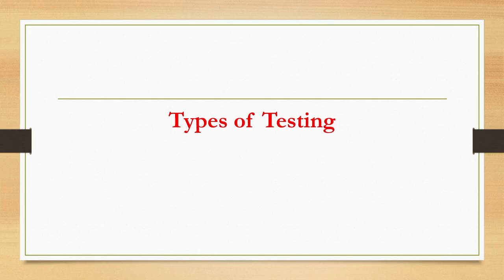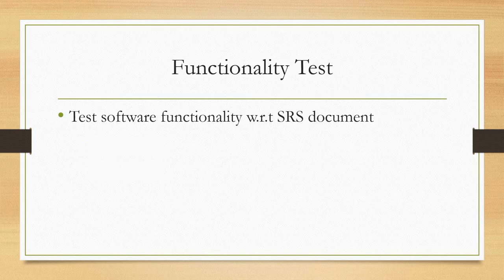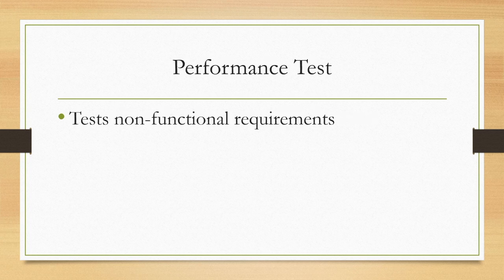Now let us focus on types of testing — what are the different types of system testing? In system testing we test functionality and performance. When we test functionality, the SRS is our primary document — whatever is listed in the SRS, we test to see if the system satisfies those functional requirements. In the performance test, the other broad category, we perform non-functional requirement testing.